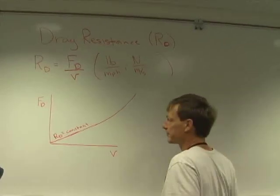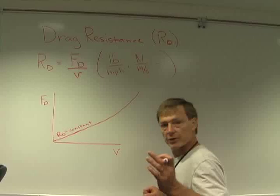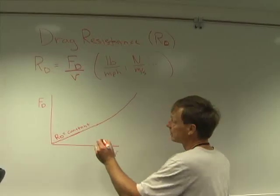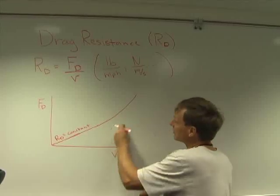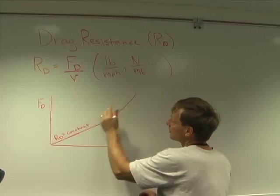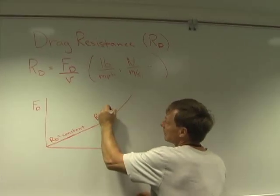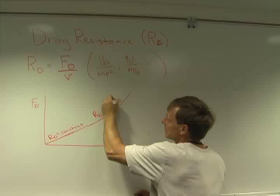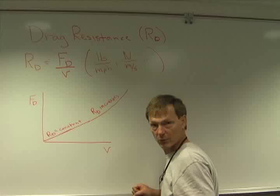When it started to slope up? So as I go faster and faster, the drag force increases faster than the velocity. This line goes up. So the slope is increasing. So the drag resistance increases. It's no longer proportionate. If I double the velocity, I may like triple or quadruple the drag force. And here's the reason.